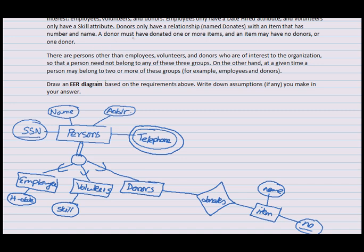So a donor must have donated one or more items. One donor must have donated many items, and an item may have no donors or one donor. An item must have just one donor, and an item has partial participation, not total, because an item could be donated or could not be donated. But a donor must donate something, or else why would they be called donors?